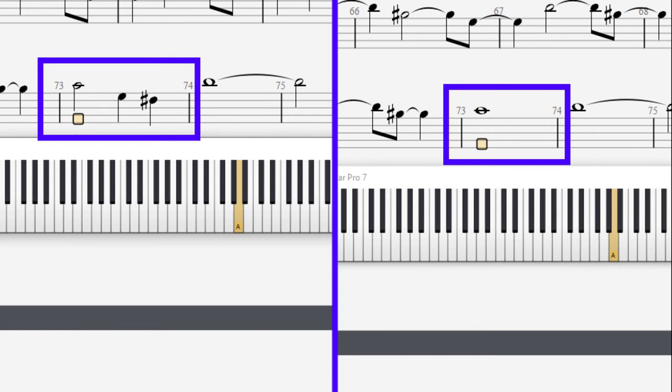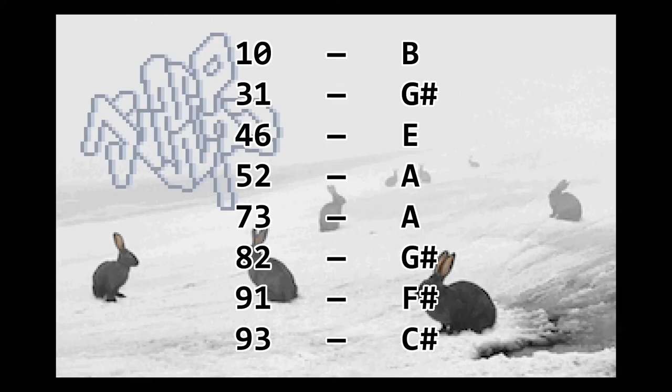Let's write down all the notes in the corresponding measures: measure 10 has note B, measure 31 has G sharp, 46 is E, 52 is A, 73 is A again, 82 is G sharp, 91 is F sharp, and 93 is C sharp.